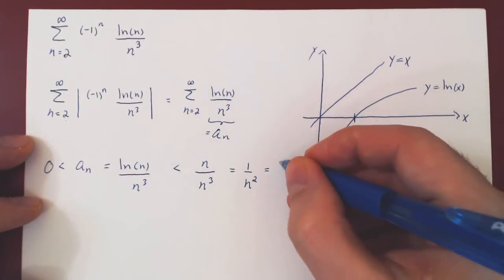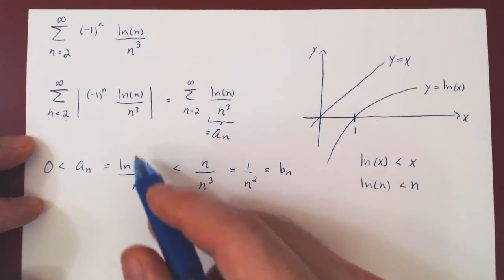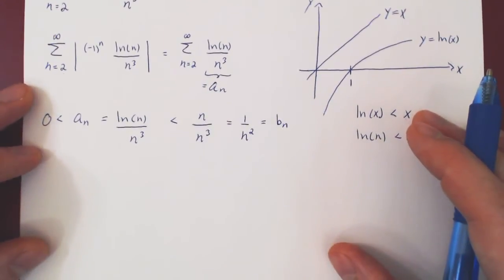This is my bn, my simpler sequence that is larger than, therefore bounding above, the initial sequence. And now we're good to go.